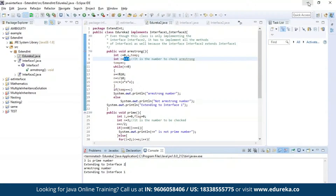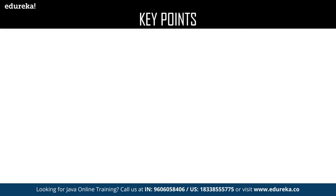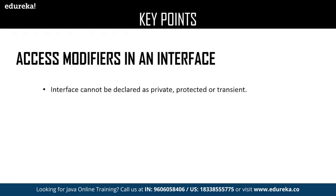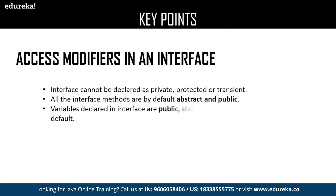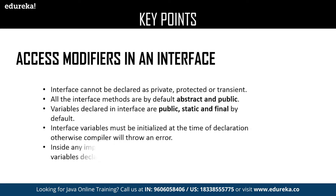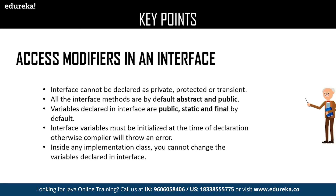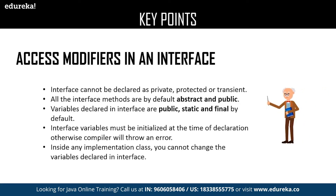The next key point is access modifiers in an interface — interface can be declared as private, protected, and transient. All interface methods by default are abstract and public. Variables declared in an interface are public, static, and final by default. Interface variables must be initialized at the time of declaration, otherwise the compiler will throw an error. Inside any implementation class, you cannot change the variables declared in an interface.